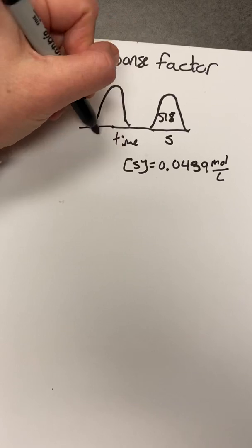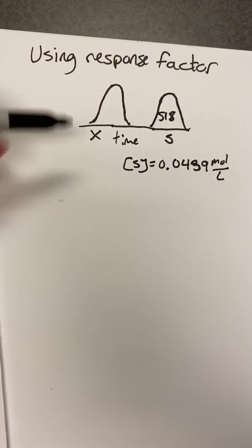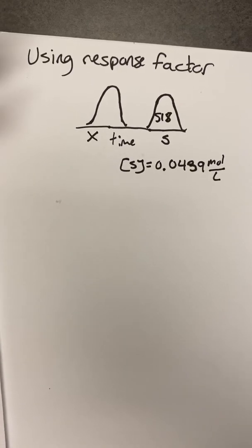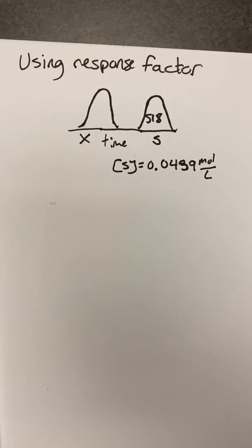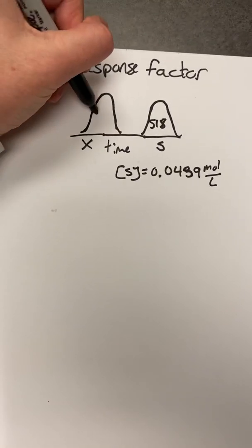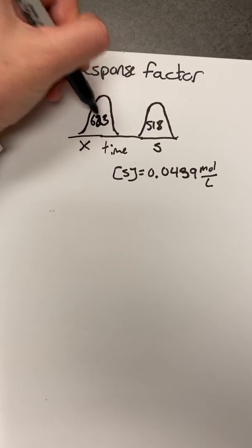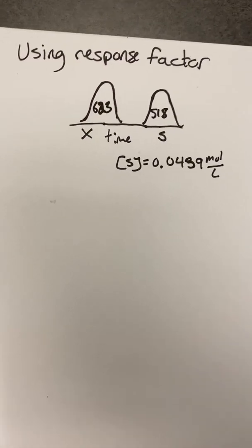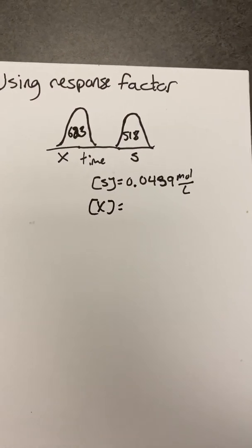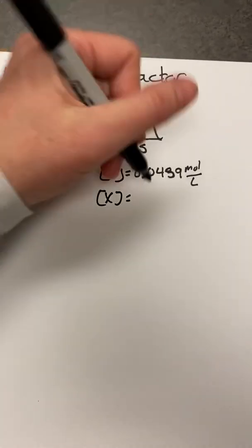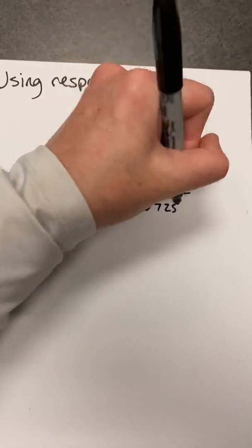Then you run another sample, we'll go ahead and call that X. And this would be your analyte, this would be the thing that you are eventually interested in determining, but first you have to run one that you actually know the concentration of. And for this particular one, let's say you get a response of 623. And again, you would know the concentration. Let's say you find it to be 0.0725 mol per liter.